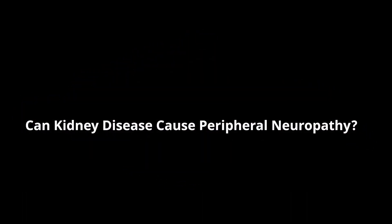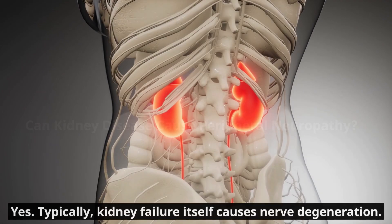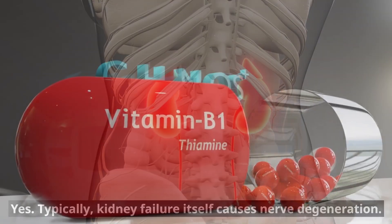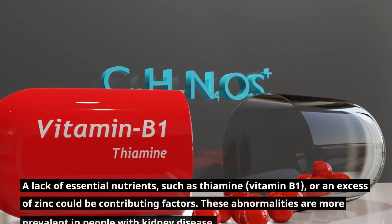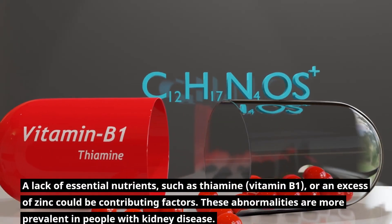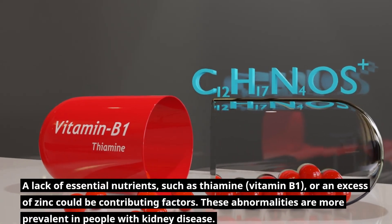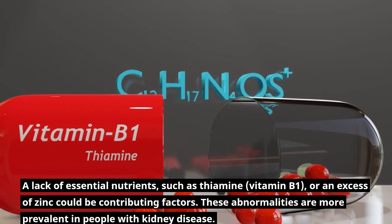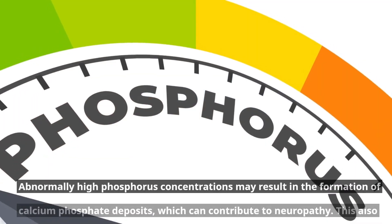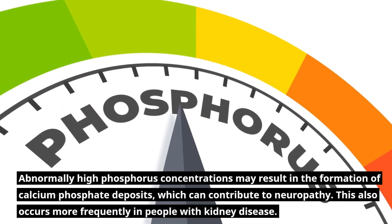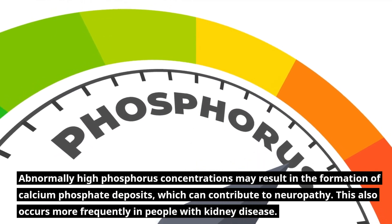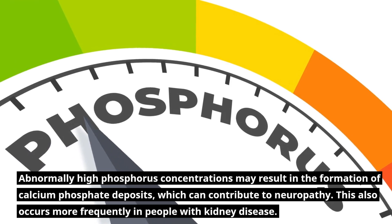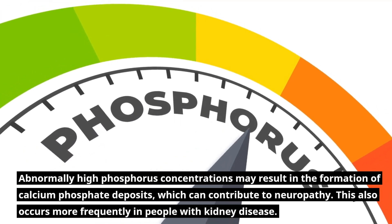Can kidney disease cause peripheral neuropathy? Yes. Typically, kidney failure itself causes nerve degeneration. A lack of essential nutrients, such as thiamine — vitamin B1 — or an excess of zinc could be contributing factors. These abnormalities are more prevalent in people with kidney disease. Abnormally high phosphorus concentrations may result in the formation of calcium phosphate deposits, which can contribute to neuropathy. This also occurs more frequently in people with kidney disease.